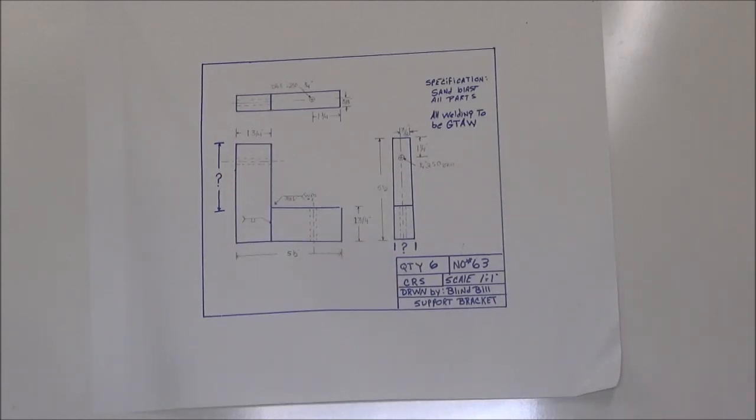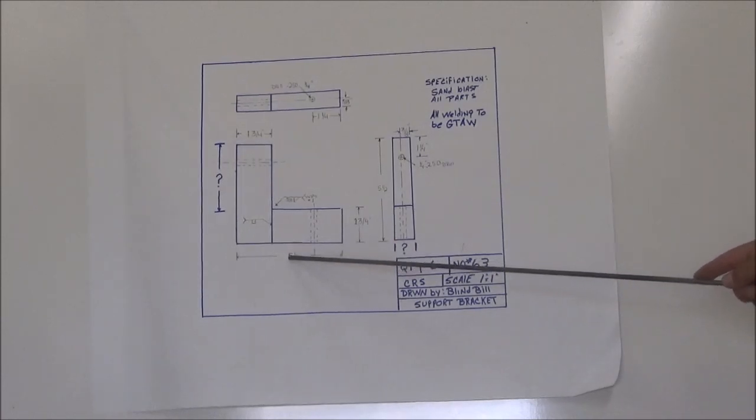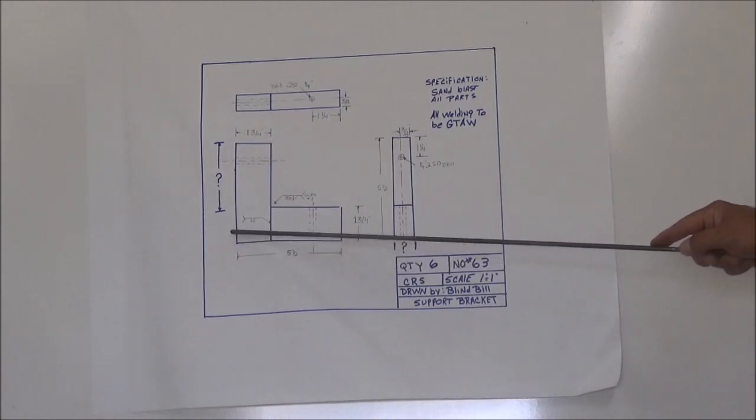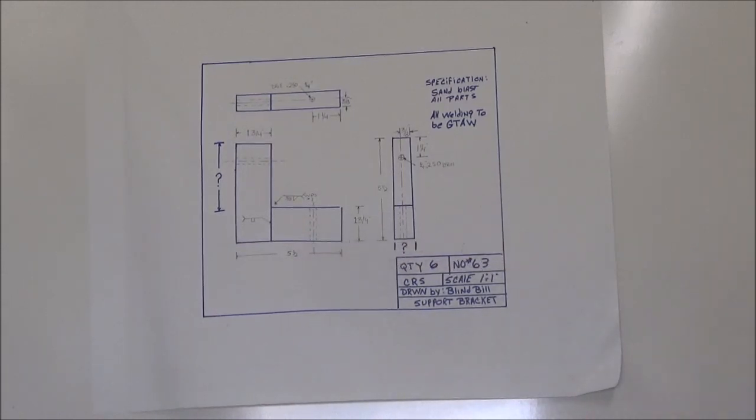Next, we have a leader line. We've used a leader here, a couple different places. We also have a dimension line, five and a half inches. These are dimension lines. And we also have our extension lines that have gone down here. So we've used a hidden line, a center line, object line, leader, dimension line, and an extension line.